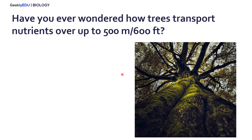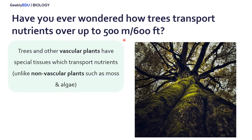Have you ever wondered how trees are able to transport the nutrients that they get in the soil from their roots up to the leaves, which can be up to 500 meters or 600 feet into the air? They're able to do this because vascular plants, such as very large trees and other plants, have special vascular tissues which transport nutrients throughout their entire bodies.